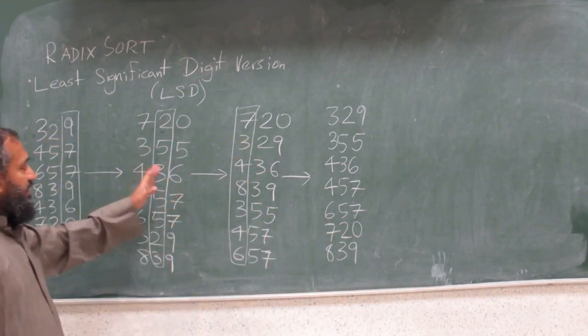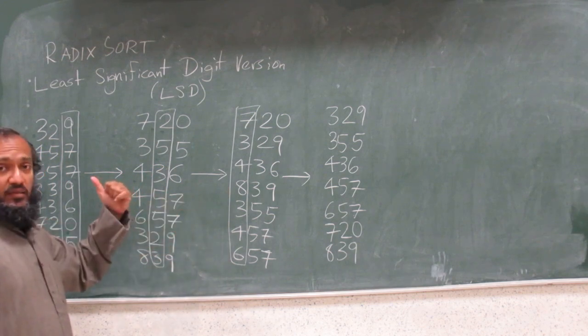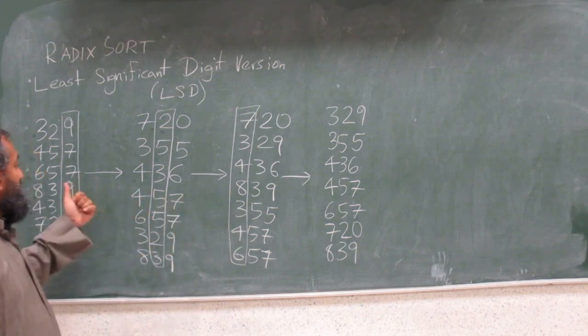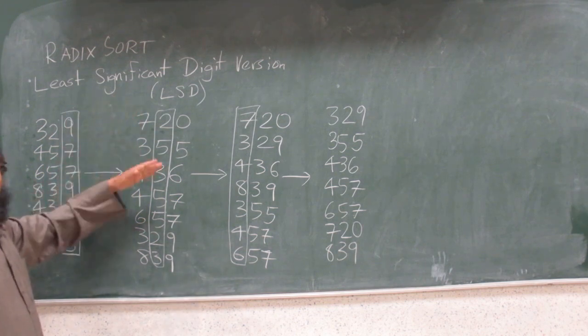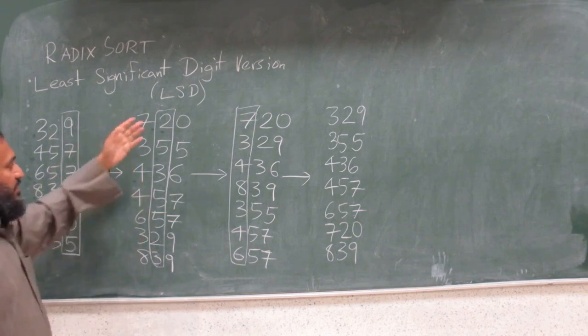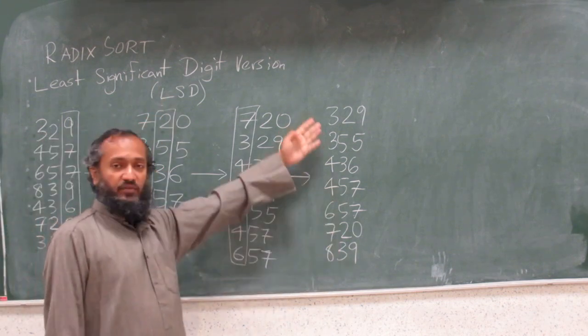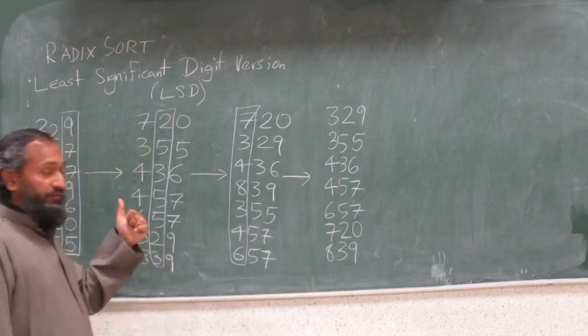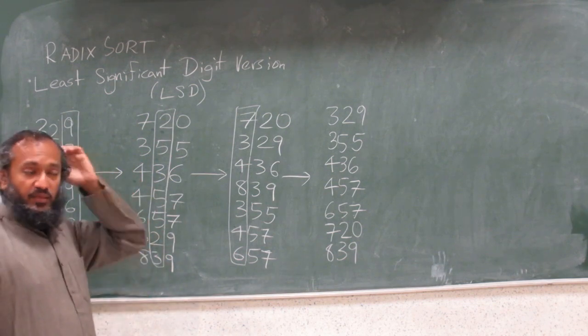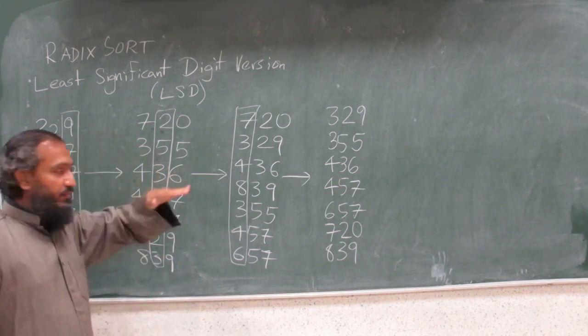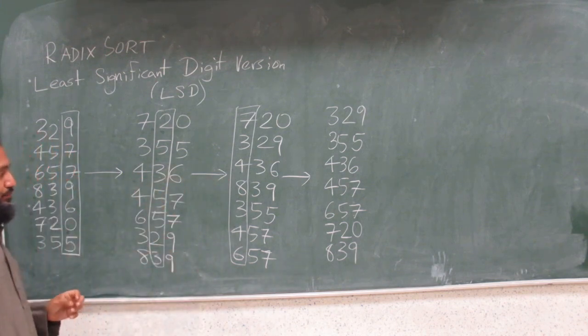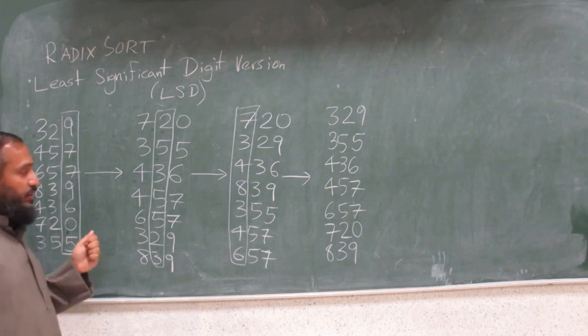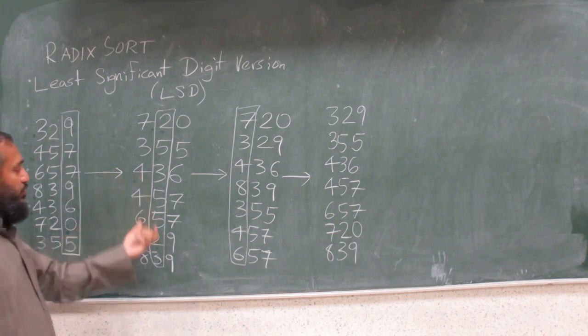I mean, the intermediate stages are very horrible-looking, unlike the most significant bit version. The most significant bit version, just to one iteration, the numbers are pretty good. There are all the 200s before the 300s, 300s before the 400s, and so on. Here, it's a mess. But look at this, the final thing is sorted. I didn't have to maintain any buckets. If you want to think about it, each number is in a bucket itself. I don't have to worry about putting boundaries between numbers and doing it within a bucket. How does this work? And what's the complexity of doing this? And how do you do each iteration?